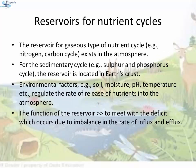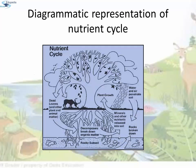The reservoir for gaseous-type nutrient cycles, like the nitrogen and carbon cycle, exists in the atmosphere. For sedimentary cycles, e.g. sulfur and phosphorus cycle, the reservoir is located in the earth's crust. Environmental factors such as soil, moisture, pH, and temperature regulate the rate of release of nutrients into the atmosphere. The function of the reservoir is to meet the deficit which occurs due to imbalance in the rate of influx and efflux. This is a diagrammatic representation of how nutrient cycles work.